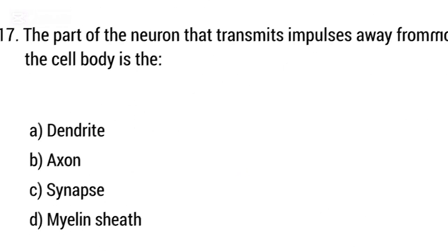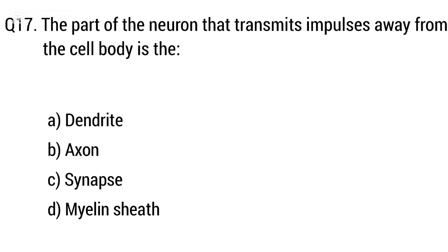Question 17. The part of the neuron that transmits impulses away from the cell body is? The right answer is option B: Axon.